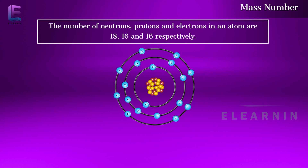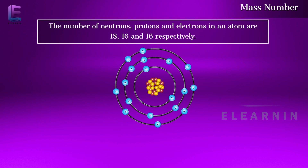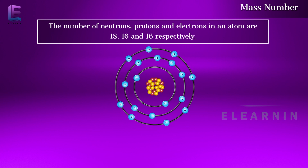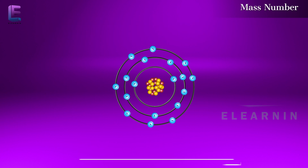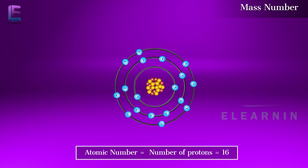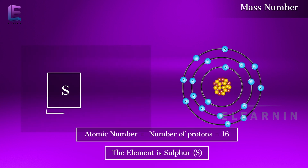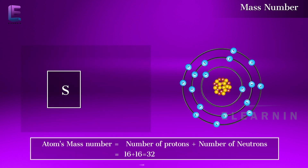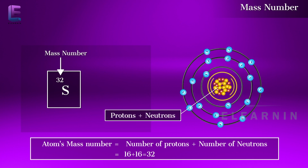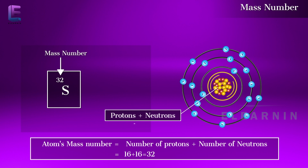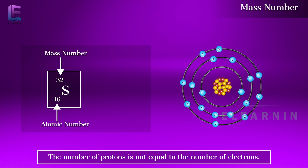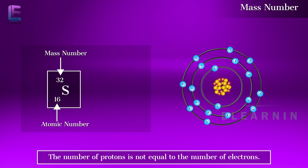The number of neutrons, protons, and electrons in an atom are 18, 16, and 16 respectively. Please give the atom its correct symbol. The atomic number equals the number of protons, which is 16, so the element is sulfur, S. The atom's mass number equals the number of protons plus the number of neutrons, equal to 16 plus 16, which is 32.